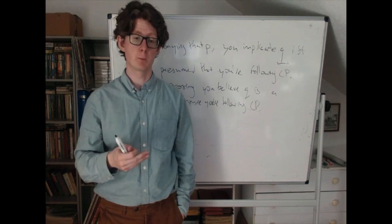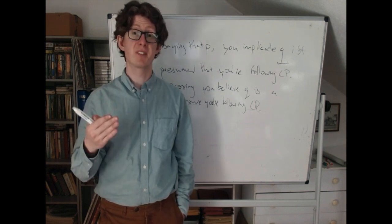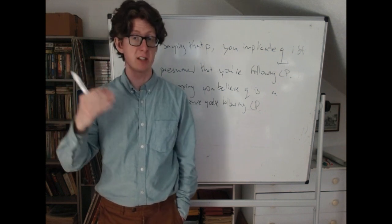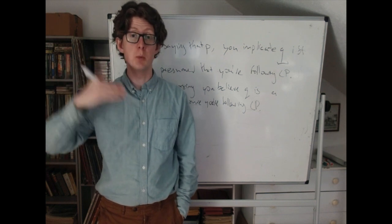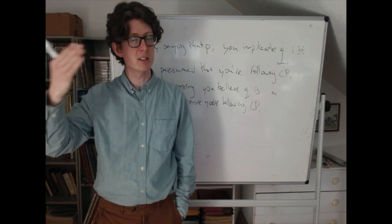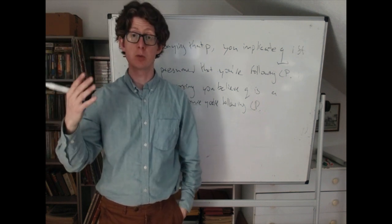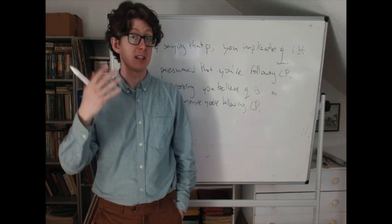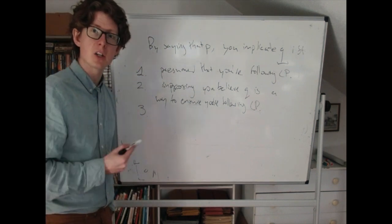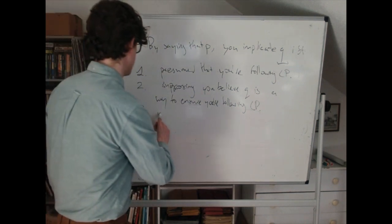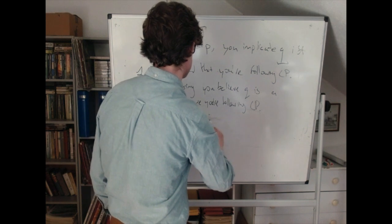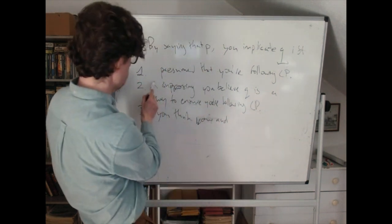Think back to the handwriting example. When you say 'the professor has good handwriting,' the reason why the speaker says that is because they presume the audience will be able to do the reasoning we're talking about. They presume the audience will recognize that they violated the maxim, and they presume the audience will be able to find the right explanation — namely, that they believe that professor is a bad professor. So when you implicate something, you think your audience is going to be able to work that out.